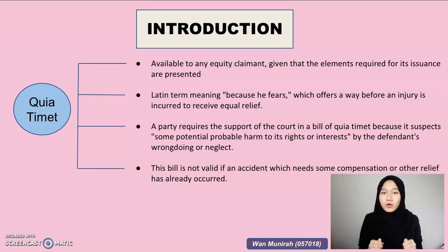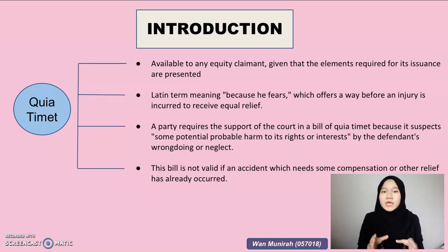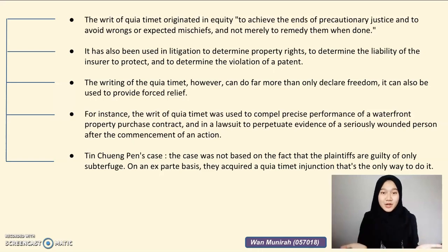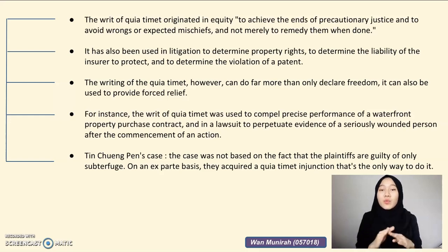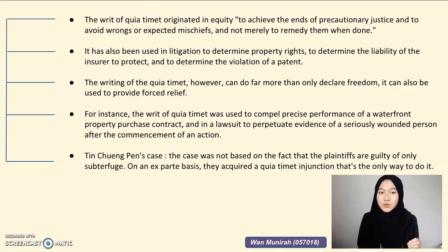A party requires the support of the court in a bill of quia timet because it suspects some potential probable harm to its rights or interests by the defendant's wrongdoing or neglect. This bill is not valid if an accident which needs some compensation or other relief has already occurred. The writ of quia timet originated in equity to achieve the ends of precautionary justice and to avoid wrongs or expected mischiefs, and not merely to remedy them when done. Modern courts continue to recognize bills of quia timet.